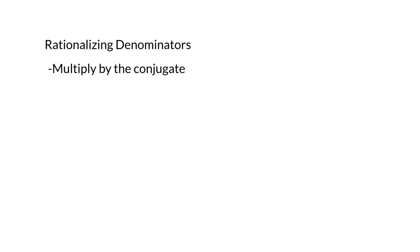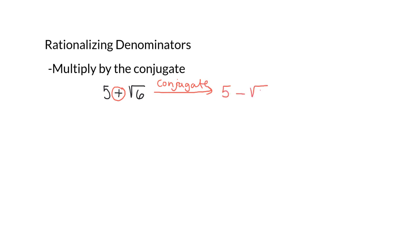What the conjugate means is, let's say that our denominator was 5 plus root 6. The conjugate would be the same expression but changing the sign. So the conjugate of 5 plus root 6 would be 5 minus root 6 — we change the sign that's in front of the radical.